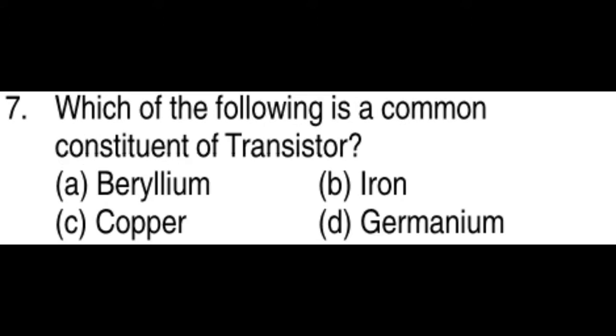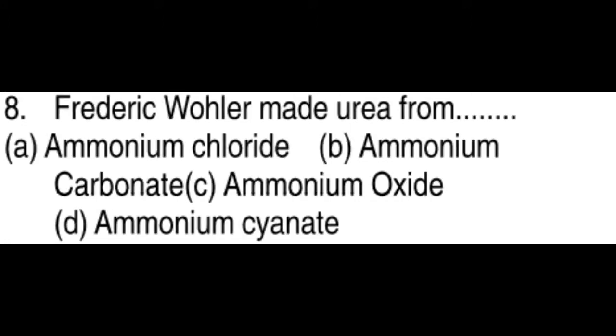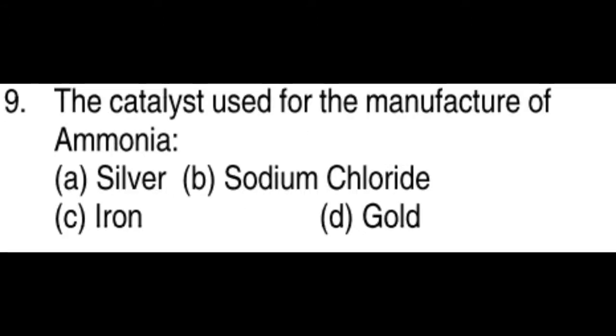Which of the following is a common constituent of transistor: Germanium. Federich Wohler made urea from Ammonium oxide. The catalyst used for the manufacture of ammonia: